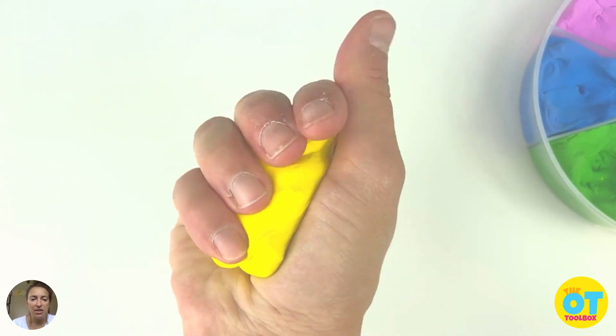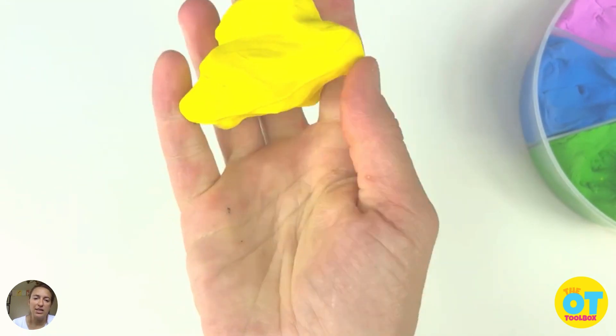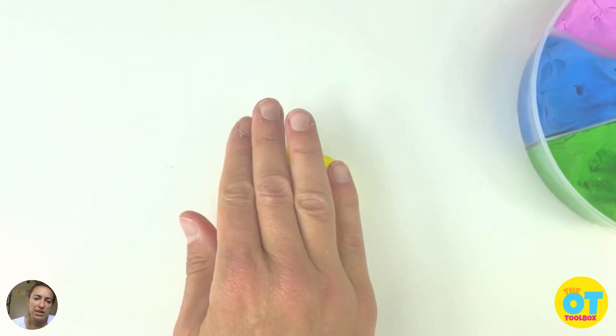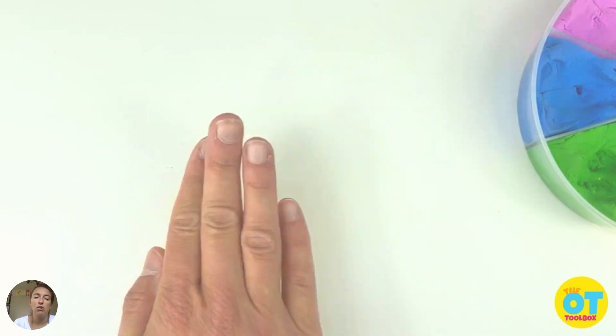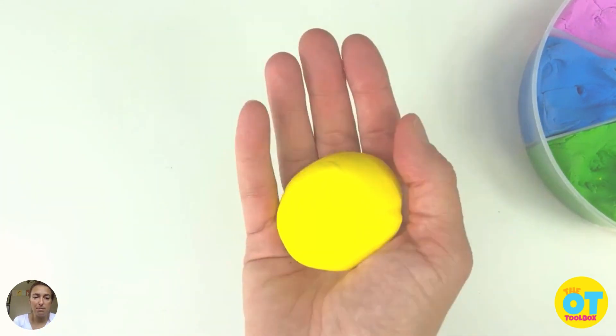Next, you can squeeze again as another transition in between the exercises. Give it a couple of squeezes. Next, we're going to put this Play-Doh down on the table and roll it along the palm of the hand.